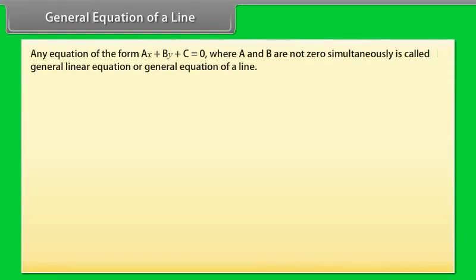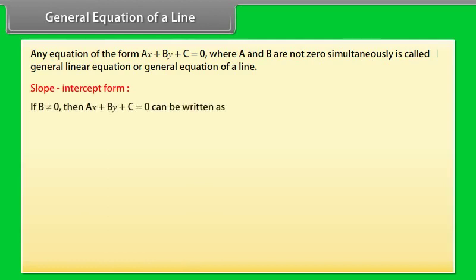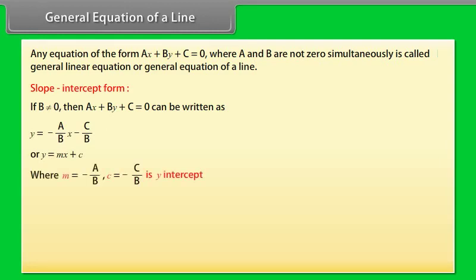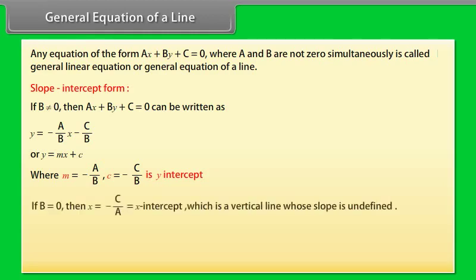General equation of a line: An equation of the form ax + by + c = 0, where a and b are not both zero, is called the general linear equation or general equation of a line. Slope-intercept form: If b ≠ 0, then ax + by + c = 0 can be written as y = (−a/b)x − c/b, i.e., y = mx + c, where m = −a/b and c = −c/b is the y-intercept. If b = 0, then x = −c/a is a vertical line whose slope is undefined.